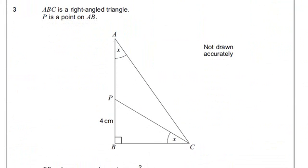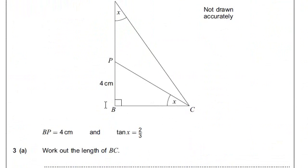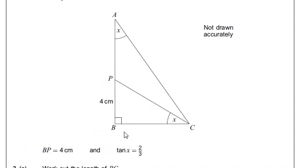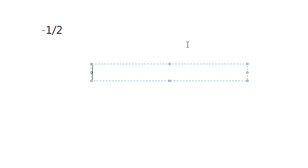Now, ABC is a right angle triangle. P is on point on AB. Then, PB is 4, given. And, tangent X is 2/3. Work out the length of BC. So, we want BC. What we can do with that, we've got tangent. Tangent is opposite by hypotenuse. We can't really use this angle, because we don't know AB. But, we can use this X, because we know PB, which is the opposite of that triangle. So, if tangent X is equal to 4 over something, and it's equal to 2 over 3, we can quite conveniently say that 2 over 3 is equal to 4 over something.